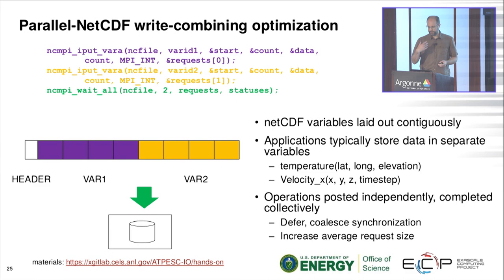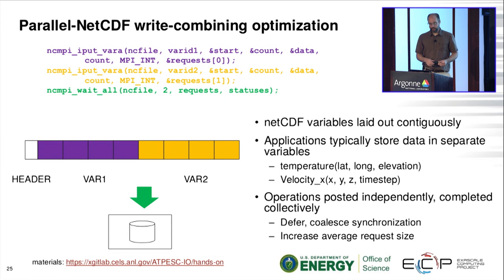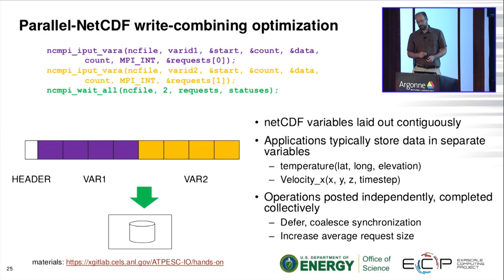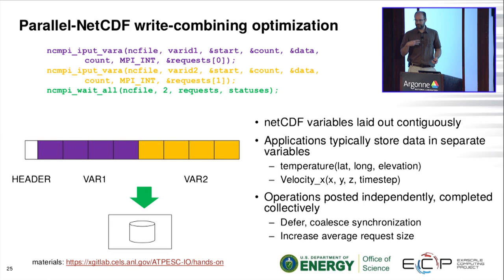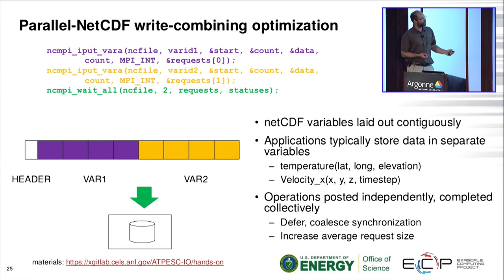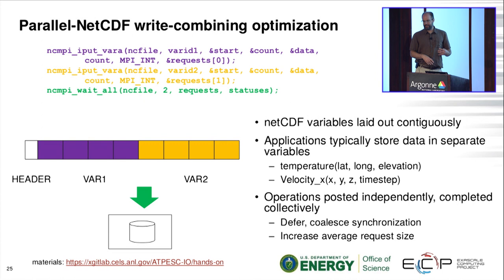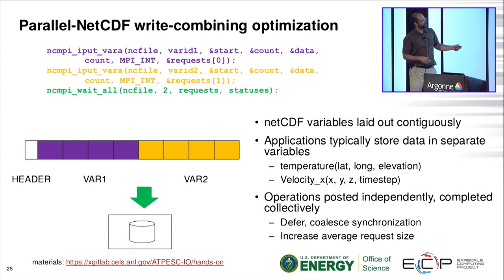Here's an optimization we added to ParallelNetCDF not found in Unidata's NetCDF: a non-blocking interface. It looks a lot like MPI's - we have an 'I' in the name indicating it won't block but completes separately. You post operations and then wait for completion. While we call it non-blocking, that's not to be confused with asynchronous progress - all the work happens in wait_all. We've given a description with multiple calls and then wait_all can combine them into a single I/O operation to storage.